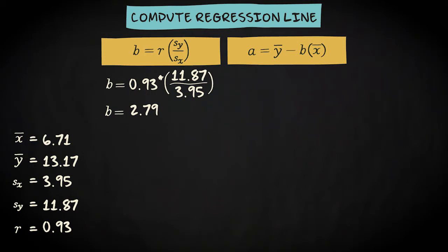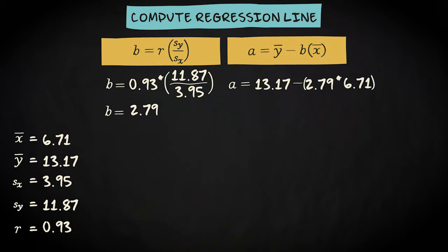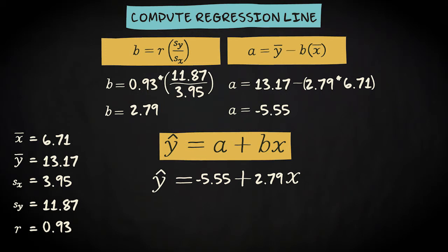The second formula computes the intercept by multiplying the computed regression coefficient with the mean of x, and then by subtracting the outcome from the mean of y. So, 13.17 minus 2.79 multiplied with 6.71. That makes minus 5.55. The regression equation is minus 5.55 plus 2.79 times x.